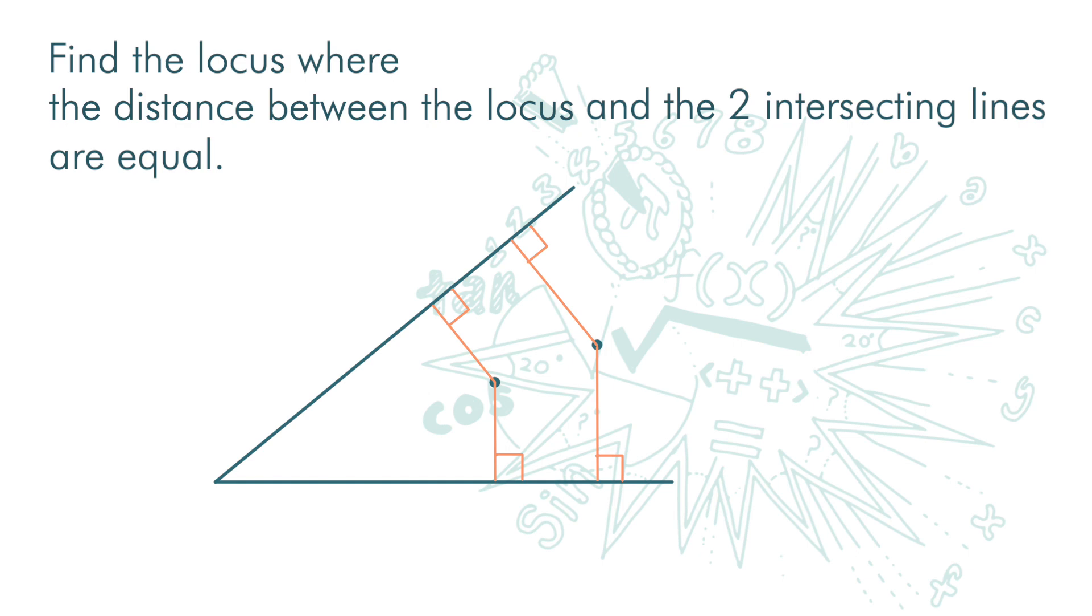We can get many more of such points, and if we join them up, we get the locus of points that is equidistant from these two intersecting lines.